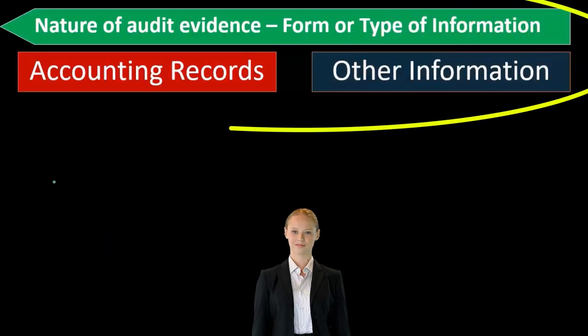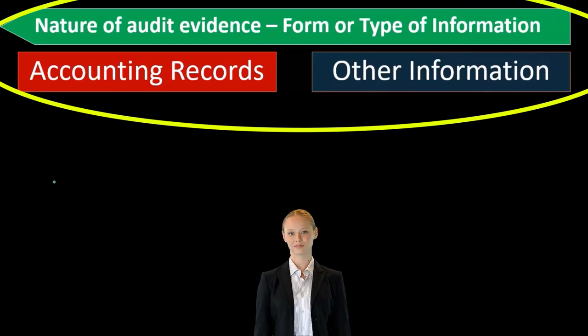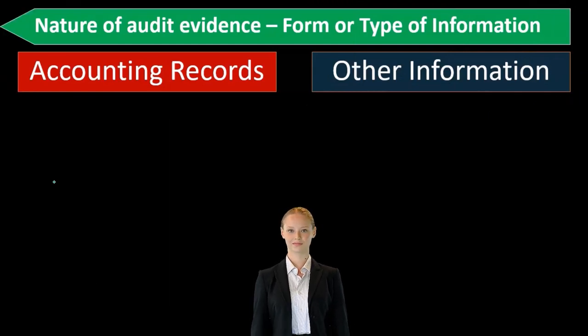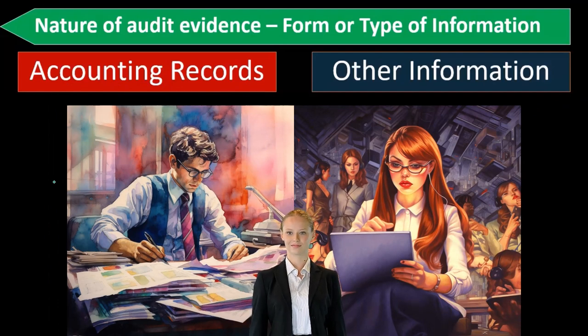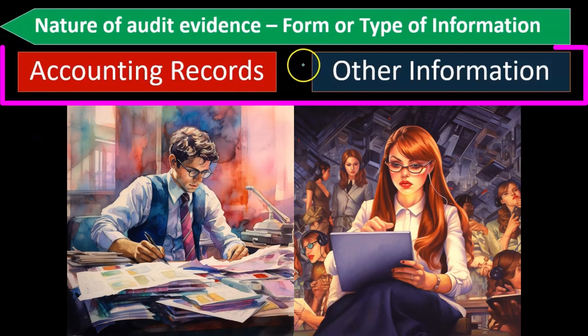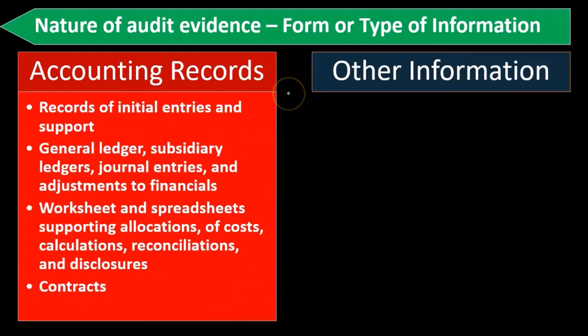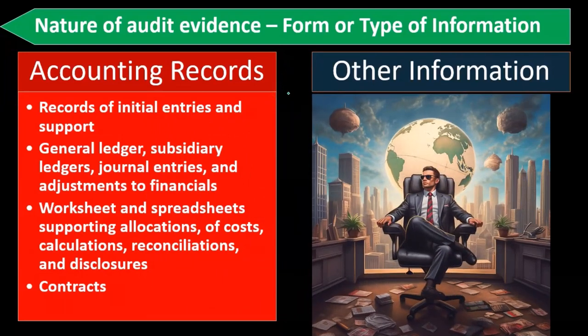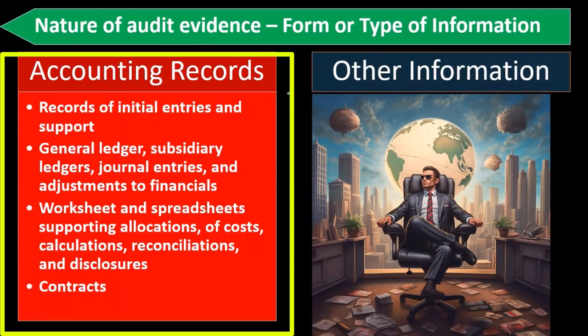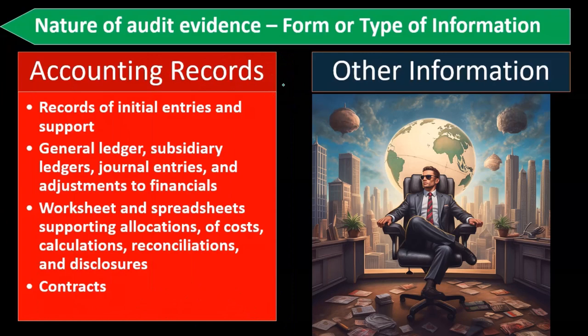The nature of audit evidence refers to the form or type of information. Accounting records include records of initial entries and support, general ledger, subsidiary ledgers, journal entries and adjustments to financial statements, worksheets and spreadsheets supporting allocations of costs, calculations, reconciliations and disclosures, and any kind of contracts.